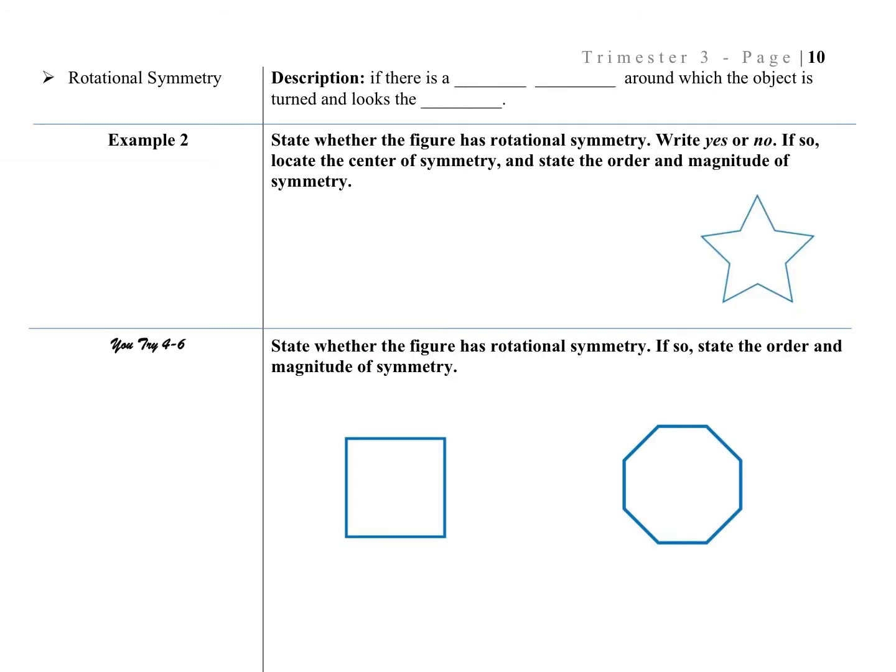Now we're going to talk about rotational symmetry. Unlike reflectional symmetry or just that line symmetry that is based off of reflections, rotational symmetry is when you rotate the object, it looks like it's the same object. So if there is some center point, so center point, around which the object is turned and looks the same. It'll be the same. Then we would say it has rotational symmetry.